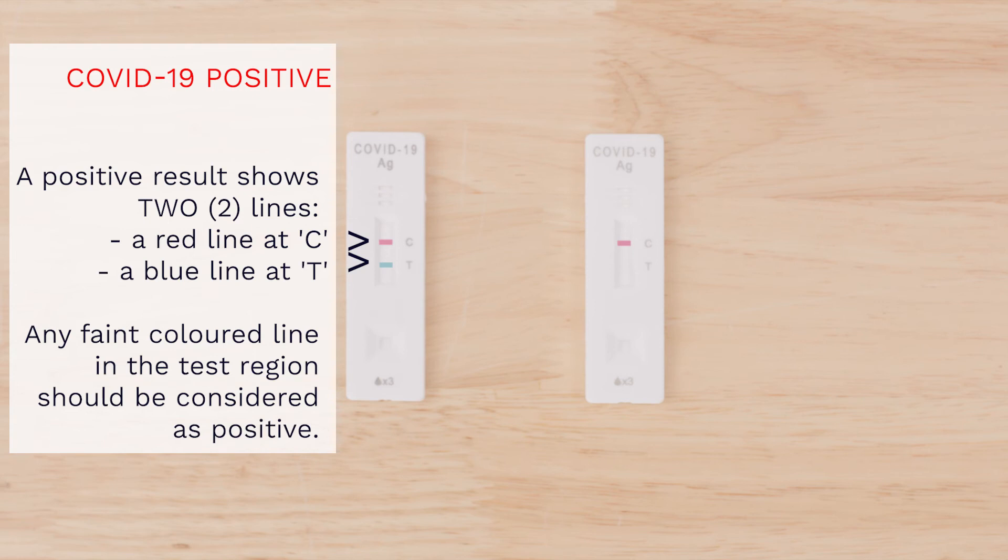COVID-19 positive. A possible positive test result shows two lines: a red line at C, a blue line at T. Any faint-colored line in the test region should be considered as positive.